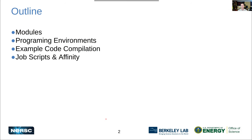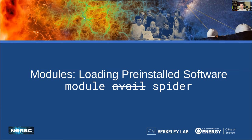These are the topics I'm looking to cover today. I picked these four mostly because I see them as the major differences between Cori and Perlmutter. The module system is slightly different. The programming environments — what compilers are available, what flags you need — are slightly different. The way you compile codes is pretty similar with one small point. And the job scripts, because the architecture for the nodes has changed. The first thing I'm going to talk about is modules.